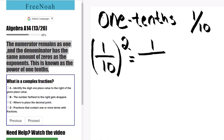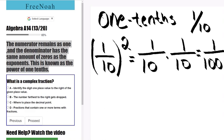We have one over ten and we're going to square it. This will rewrite as one over ten times one over ten, giving us one over one hundred. So one over ten squared equals one over one hundred.